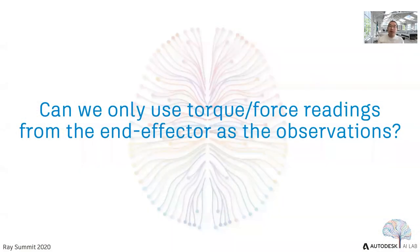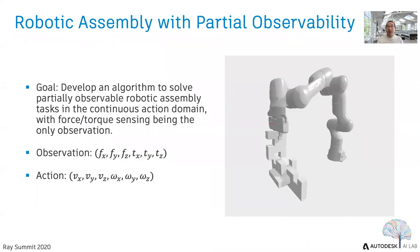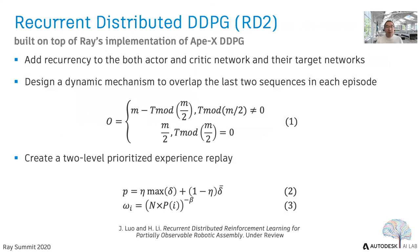Therefore, we want to explore: can we only use torque force readings from the end-effector as observations? This is a topic about robotic assembly with partial observability. The goal is to develop algorithms to solve partially observable robotic assembly tasks in a continuous action domain, with torque force sensing being the only observation — no external systems needed for velocity or pose information. The robot with its onboard sensors makes decisions based on partial knowledge of the environment. To solve this, we propose Recurrent Distributed DDPG, short for RD2.